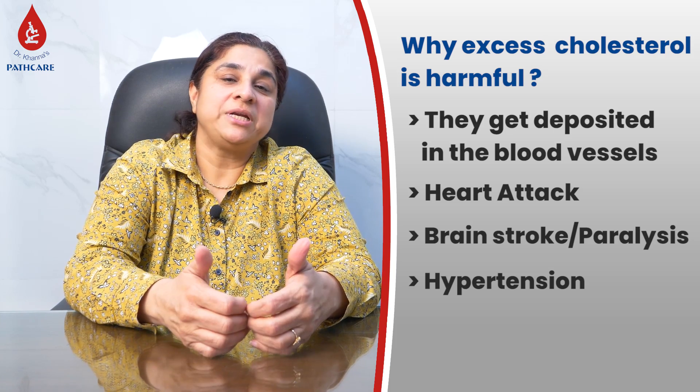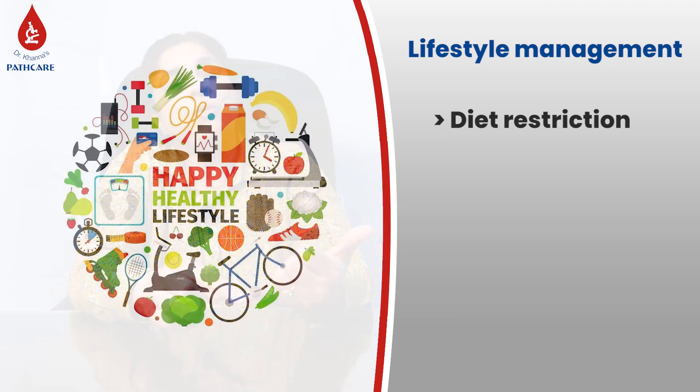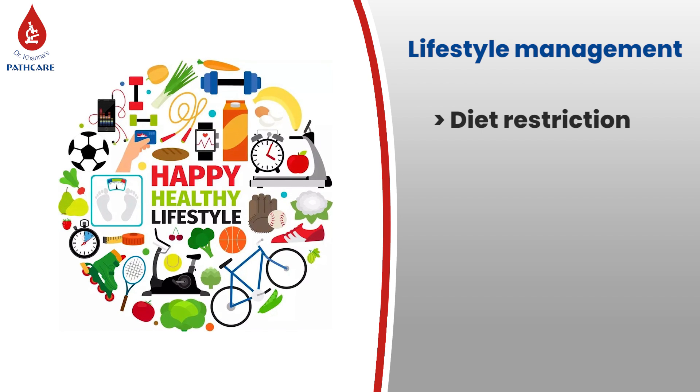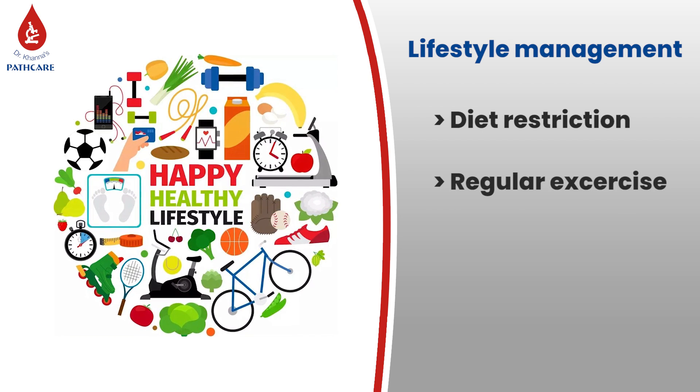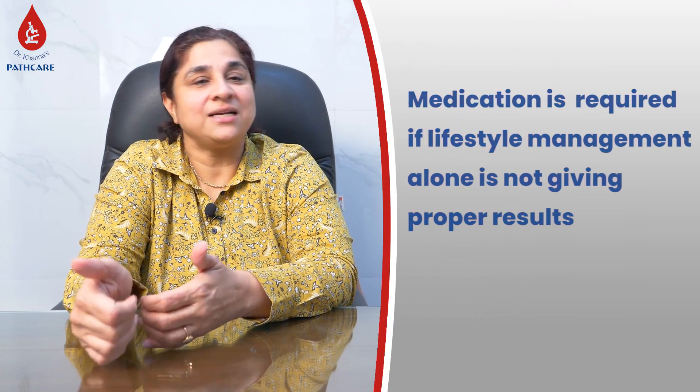If you have hypertension or a family history of stroke or heart attack, it is necessary to get these tests done every six months. If levels are persistently high, the first form of treatment is lifestyle management — the most important being diet restrictions and exercise. If after one to two months of lifestyle changes the levels are still not under control, you should then go in for medications like statins.